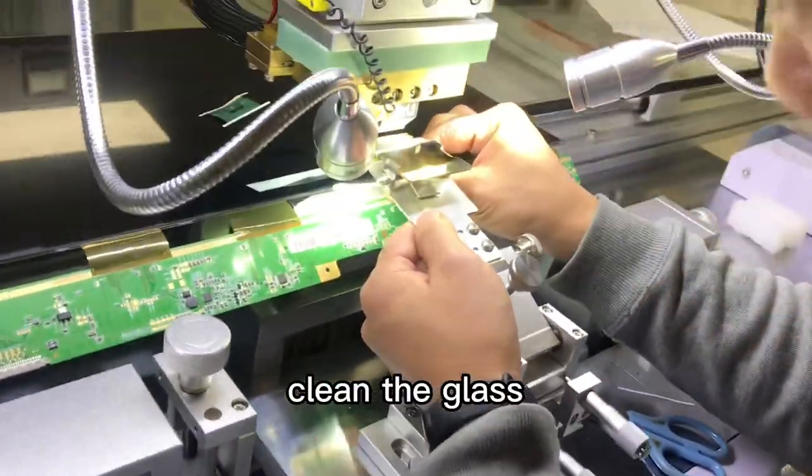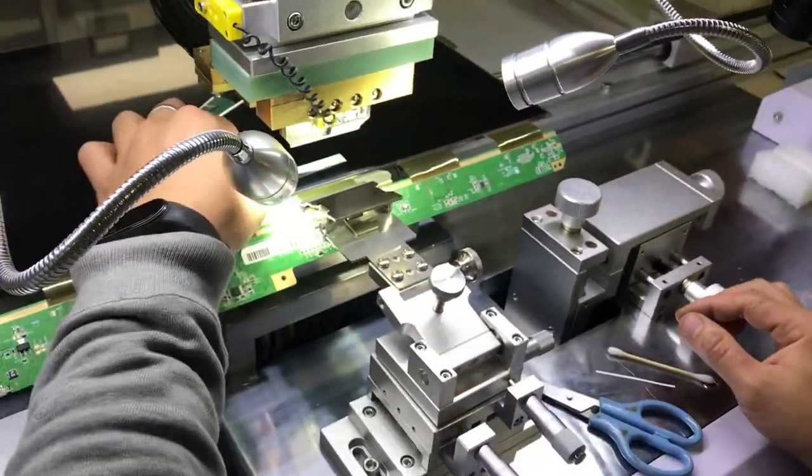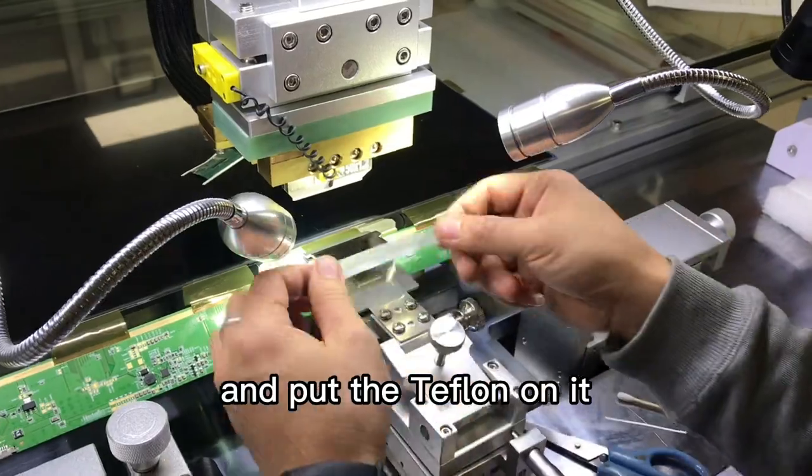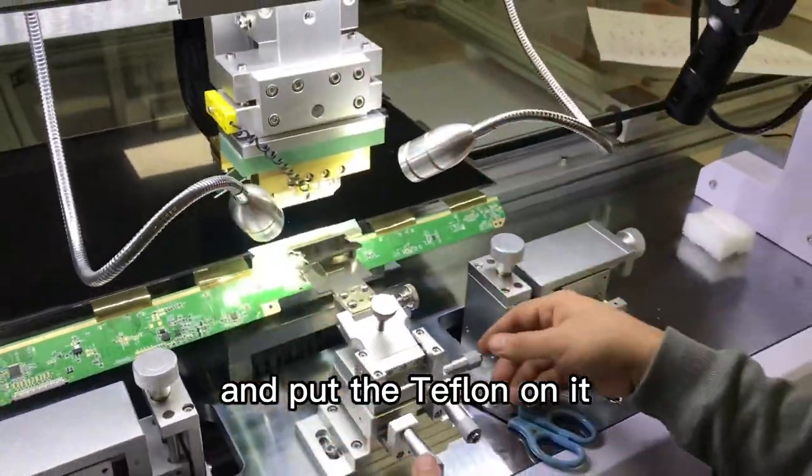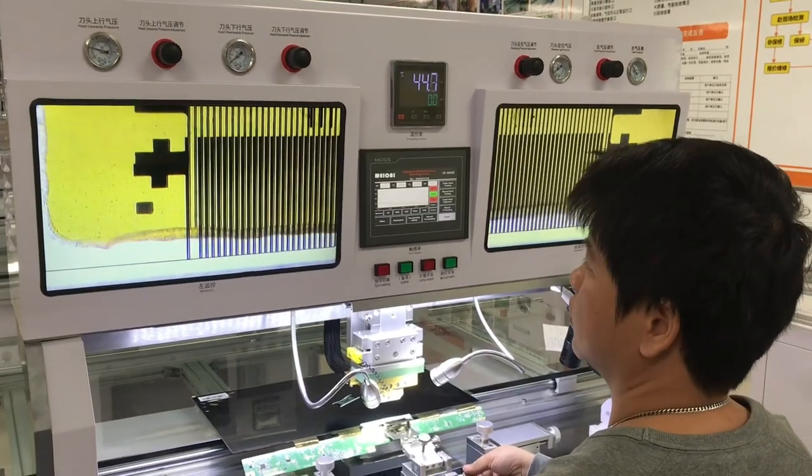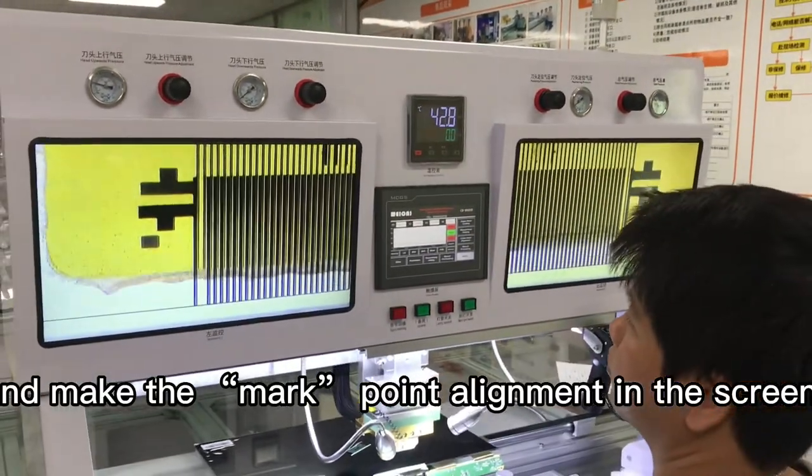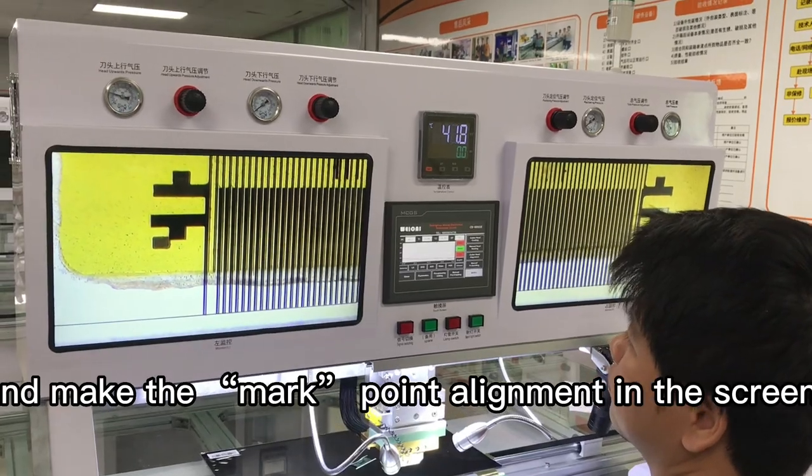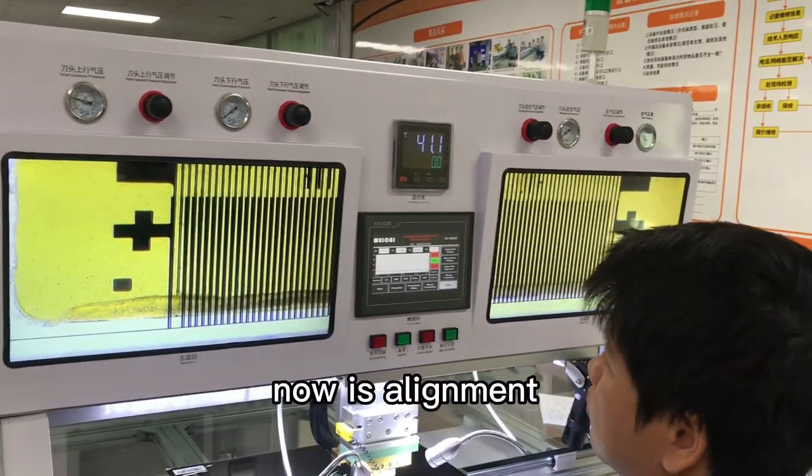Clean the glass and put the teflon on heat. Close the teflon on heat and make the mark home alignment in the screen. Put the teflon on heat.